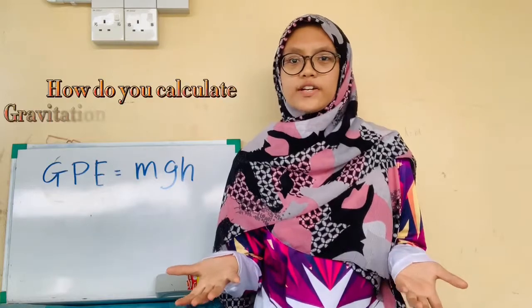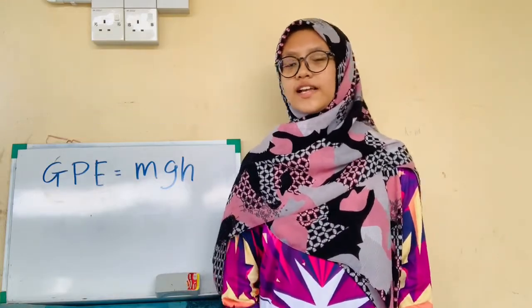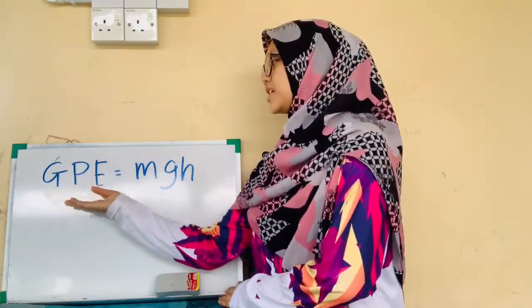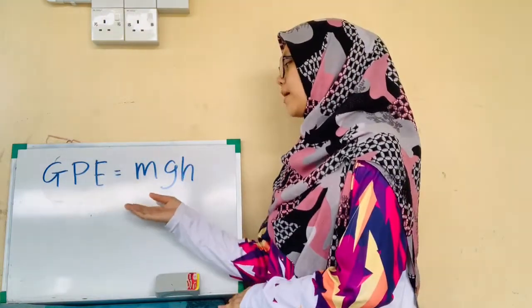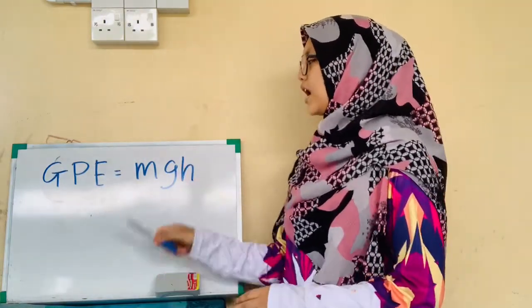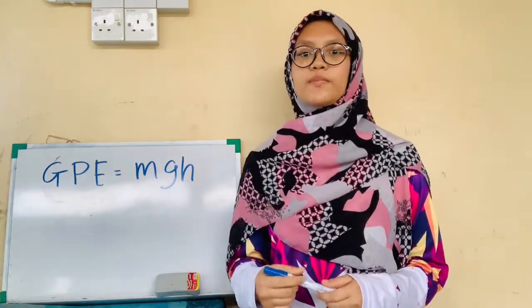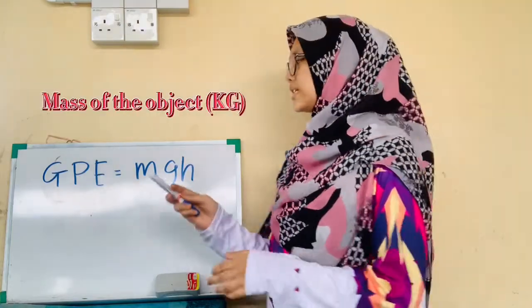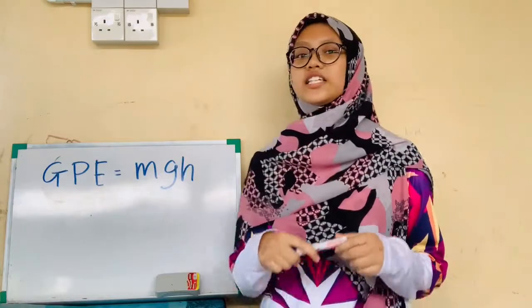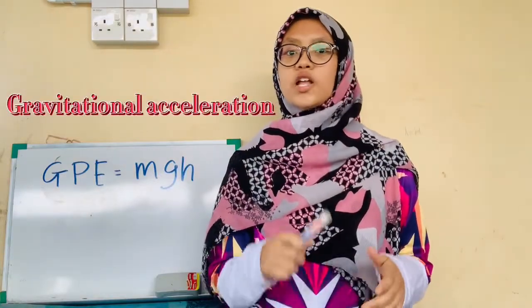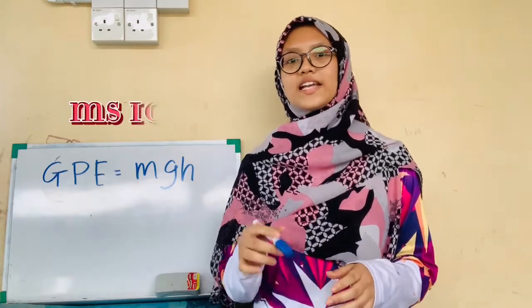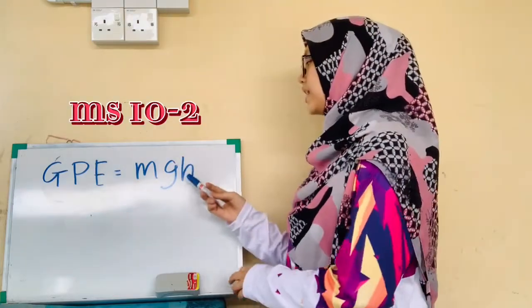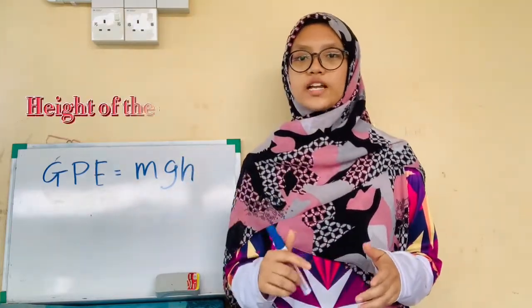How do we calculate Gravitational Potential Energy? Here's the formula. GPE, which stands for Gravitational Potential Energy, equals MGH. M represents the mass of the object. G is the Gravitational Acceleration, with a value of 10 m/s². And H is the height of the object that was lifted from the ground, in meters.